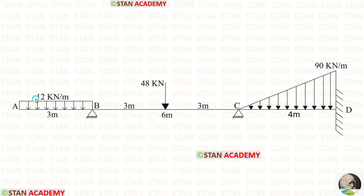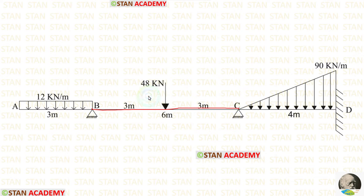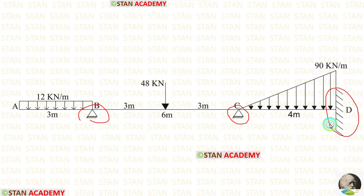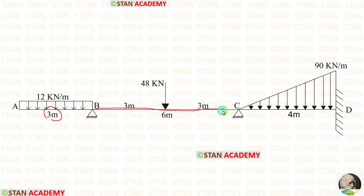In the overhanging span, there is a uniformly distributed load of 12 kN per meter acting for the full span. In the span BC, there is a point load of 48 kN acting at the center. In the span CD, there is a uniformly varying load that varies from 0 at point C to 90 at point D. At points B and C there are hinged supports, and at point D there is a fixed support. The overhanging span is 3 meters long, span BC is 6 meters long, and span CD is 4 meters long.